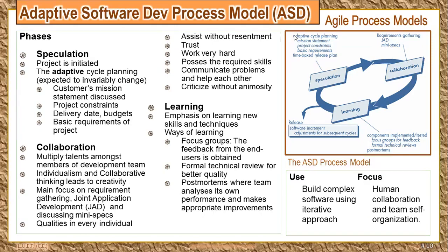Next we move on to the collaboration phase. The collaboration phase is one in which there are multiple talents among the team members, which they need to share with each other in order to move forward towards a successful, high-quality product. Collaboration emphasizes individualism because individual creativity plays an important role in collaborative thinking. The main focus of this phase is on JAD — Joint Application Development — along with requirement gathering by talking to the customer and discussing the mini specs, specifying every minute detail in the project.